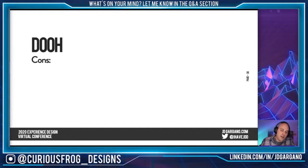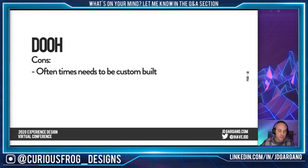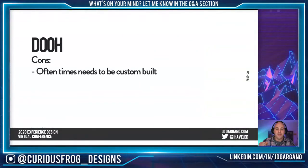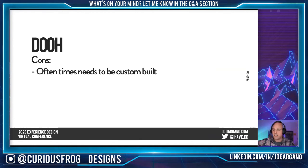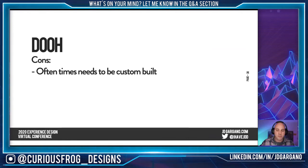So obviously there's got to be some cons to digital out of home, just like anything else. It oftentimes needs to be custom built. For somebody like myself who's a designer, that's great for me. But the deliverables list is super long because there's no standardization. You've got billboards that are long and skinny, or now you have landscape billboards and portrait billboards, and you've got things on the side of buses and in the back of taxi cabs. There is no standardization. With television, you know exactly what you have to design to.